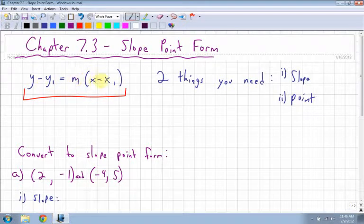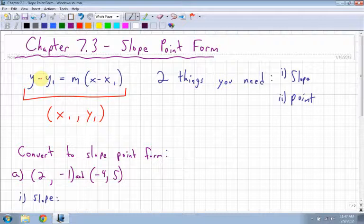Keep in mind that these are both minuses, so if your point x₁, y₁—the point is always x₁, y₁—if either one of these is negative, then these signs are going to change to plus, just because it's a minus and a negative.